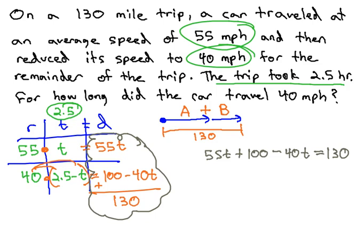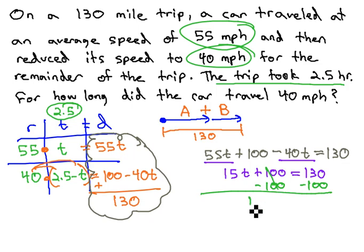We now have an equation we can quickly solve to answer the question. Combining like terms gives us 15T plus 100 equals 130. Solve the two-step equation by subtracting 100 from both sides to give us 15T equals 30. And finally, dividing both sides by 15, we know T, our time, is equal to 2.